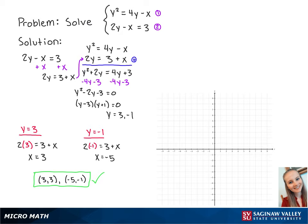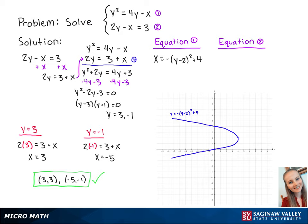We can also graph the two equations and the solution. The standard form for the first equation is x equals negative (y minus 2) squared plus 4. Using our knowledge of transformations, we can make a graph that looks like this.